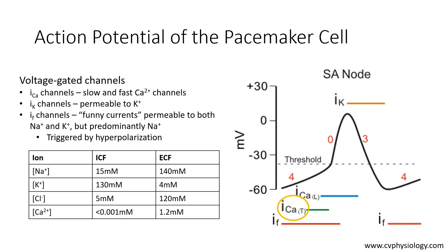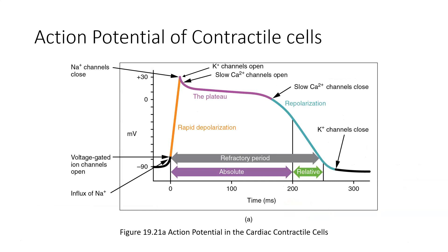This process repeats itself for all 2 billion heartbeats in a person's lifetime. Now let's take a look at the action potential of the contractile cells in the heart.